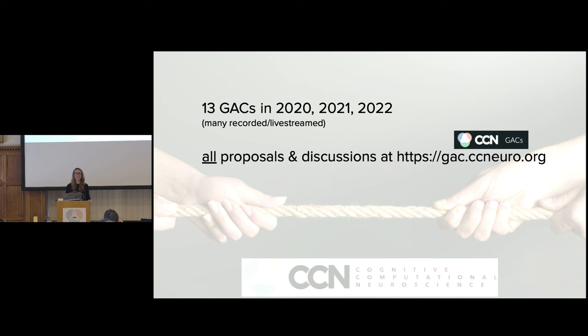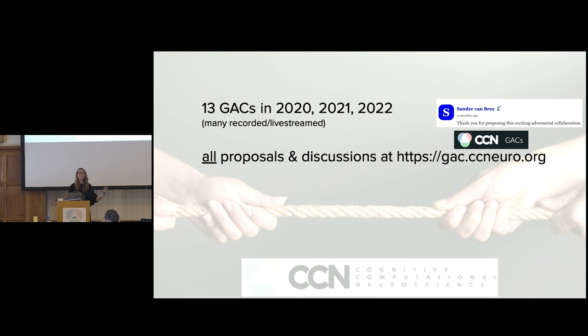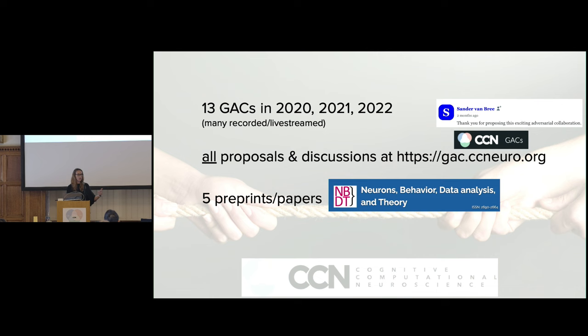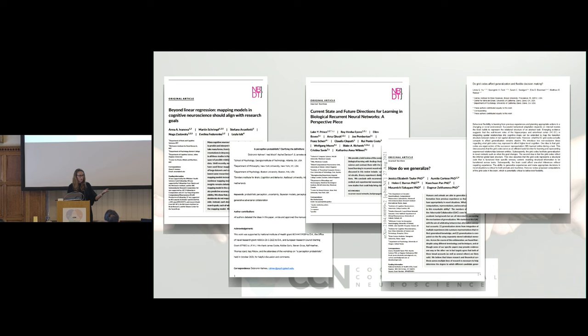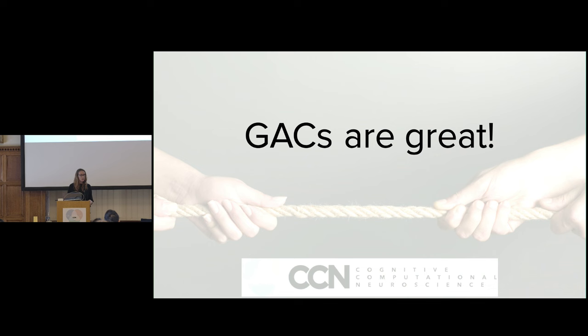I recognize that checking the GAC forum isn't at the top of everyone's daily checklist, so there hasn't been a whole lot of lively conversation there - but I wanted to give special thanks to the one person who has participated in the online conversation, and I really encourage you all to go check it out. We also have five preprints and papers coming out in the journal Neurons, Behavior, Data Analysis and Theory - five beautiful papers with really lovely discussion that aligns vocabulary, taxonomy, and ideology, or at least flushes out the differences and sources of controversy.